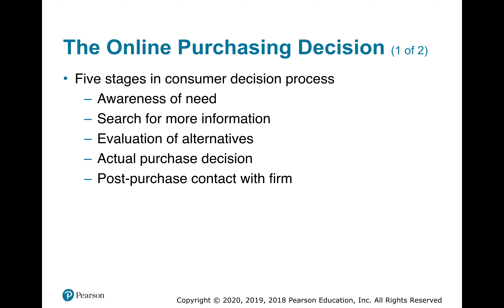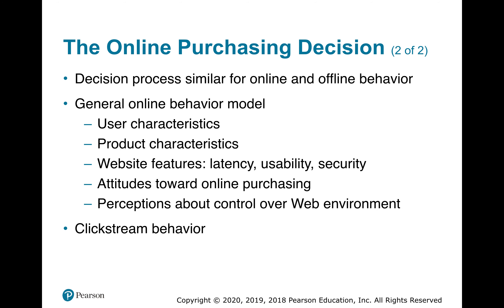Did you buy a Timex watch or something like that — did they send you an email to write a review? All of those would be post-purchase contact with the firm. The decision process is similar for online and offline behavior. The general online behavior model uses characteristics such as product characteristics, website features like latency, usability, and security, attitudes toward online purchasing, and perceptions about control over the web environment — with clickstream behavior being a huge player in that.